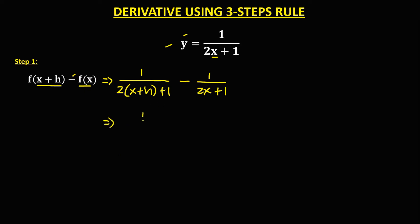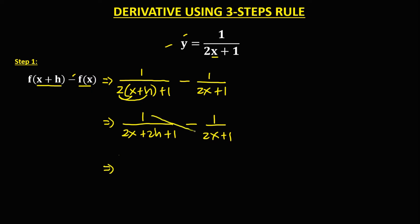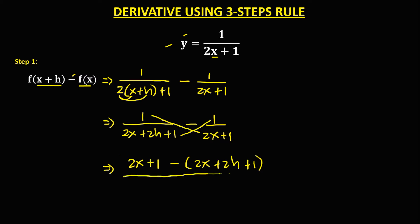Then simplify. Distribute the 2: so we have 1 over 2x plus 2h plus 1, minus 1 over 2x plus 1. Then find the LCD using cross multiplication. So the numerator becomes 1 times (2x plus 1) minus (2x plus 2h plus 1) times 1, over the product of the two denominators: (2x plus 2h plus 1) times (2x plus 1).